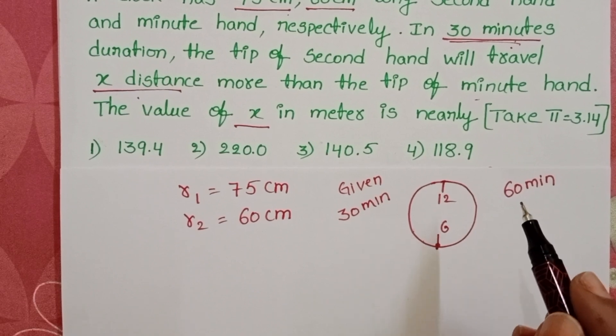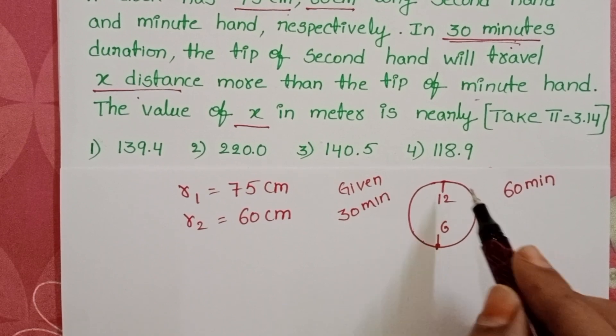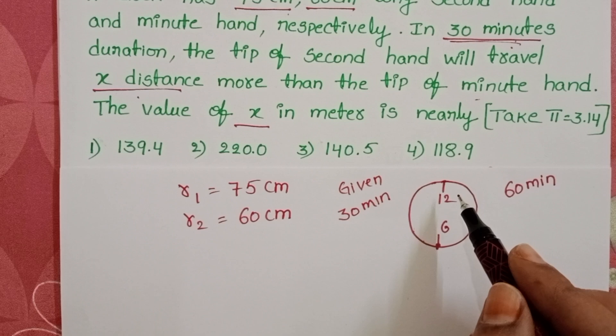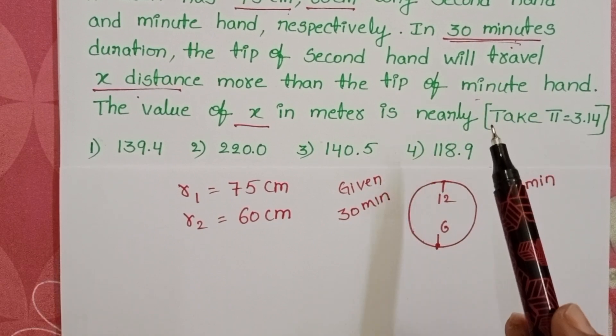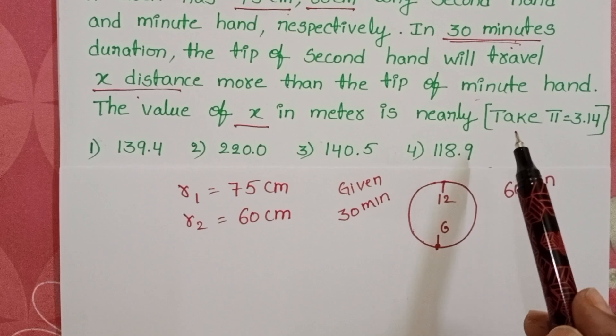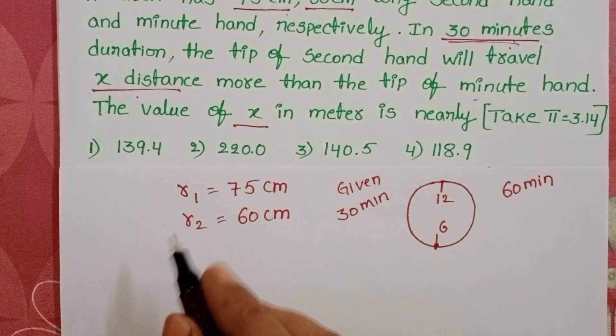And the second hand takes 1 minute time for 1 revolution. The given time is 30 minutes, so the number of revolutions completed by the second hand is 30.